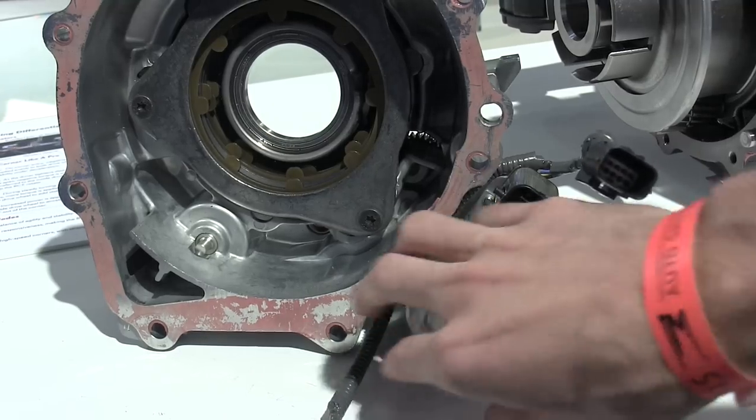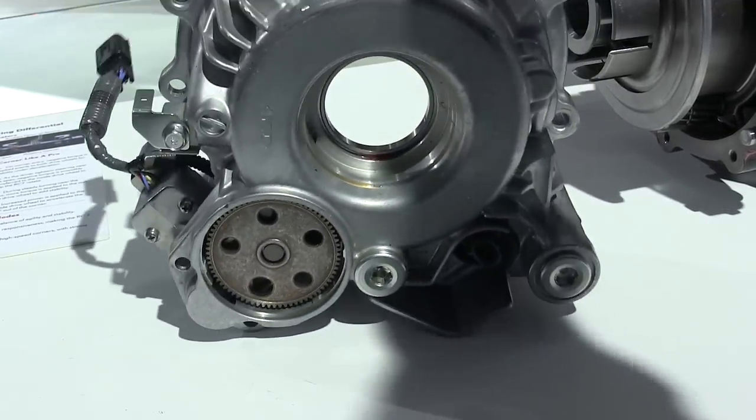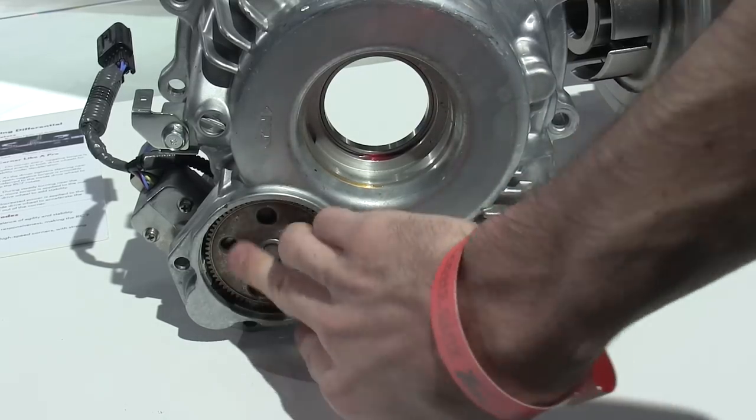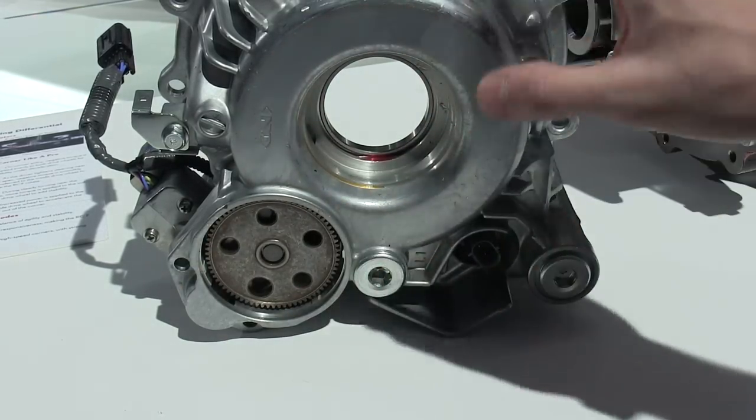So here you can see how the electric motor mounts up with the housing and then if you look on the other side you can see the gear that this motor meshes with and so as that gear rotates it will apply more or less pressure to the clutch pack.